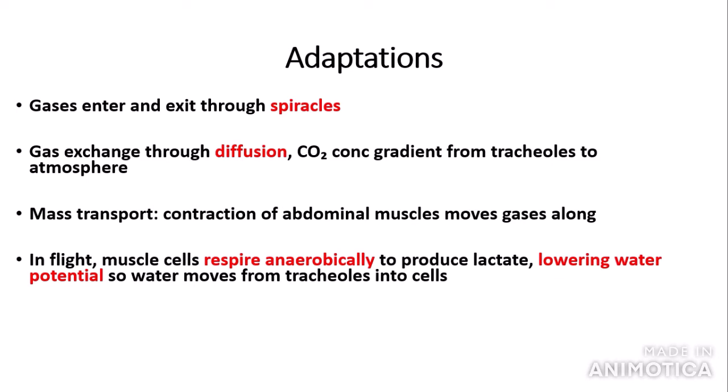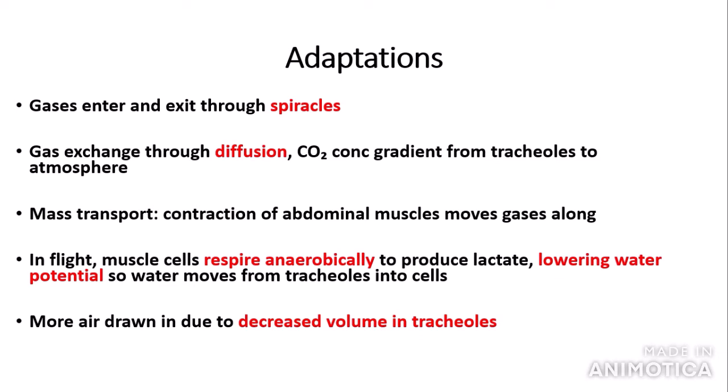When in flight, the muscle cells of the insect respire anaerobically to produce lactate. This production of lactate lowers the water potential, so water moves from the tracheoles into the cells to carry out various cellular processes. This means that more air is drawn into the tracheoles to decrease the volume as water has moved out into the cells, allowing the insect to respire more efficiently during flight, which is obviously advantageous to their survival.